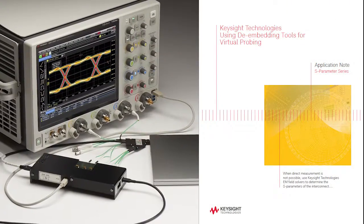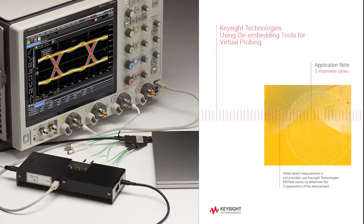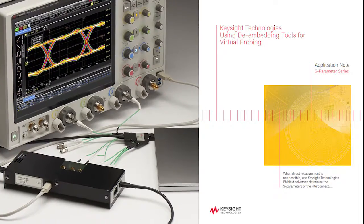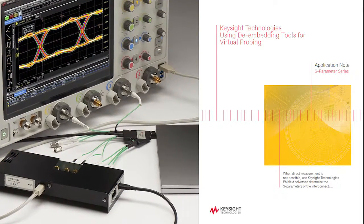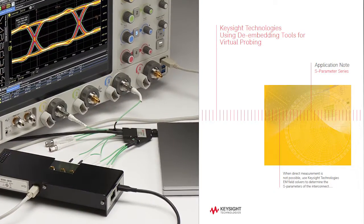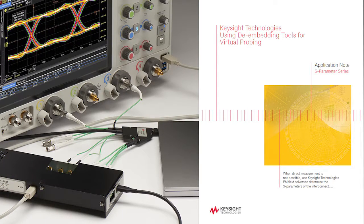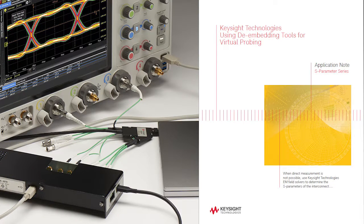Keysight will provide S-parameters for the high-speed fixture to allow de-embedding, and also provide S-parameters of the USB-IF compliance fixtures as they become available to allow embedding of that loss. The embedding and de-embedding is done in Infinium oscilloscopes using InfiniiSim or compliance applications.